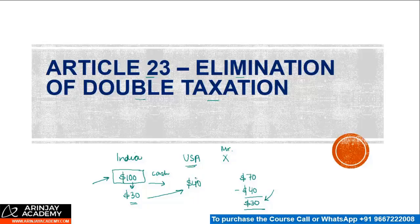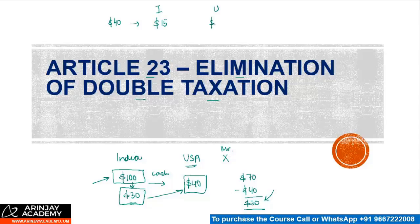To avoid this double taxation — $40 by the US and $30 by India — Article 23 addresses two main situations. Situation one: India and the US agree that the total tax imposed is $40, the higher of the two, with India retaining perhaps $15 and the US getting $25.